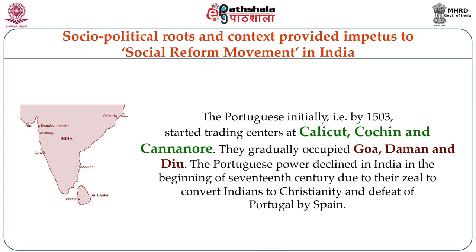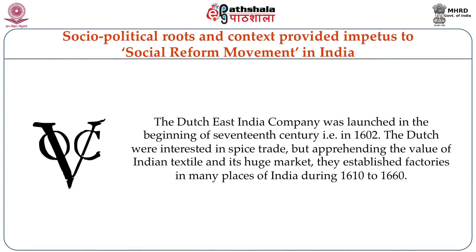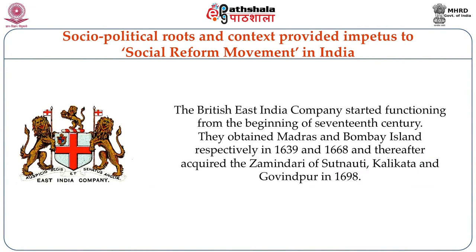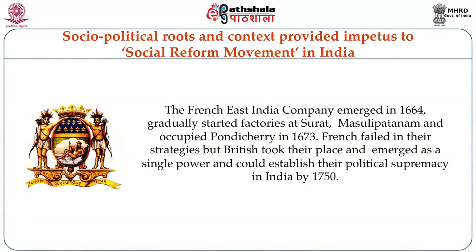The Dutch East India Company was launched in the beginning of the 17th century, that is in 1602. The Dutch were interested in spice trade, but apprehending the value of Indian textile and its huge market, they established factories in many places of India during 1610 to 1660. The British East India Company started functioning from the beginning of the 17th century. They obtained Madras and Bombay Island respectively in 1639 and 1668, and thereafter acquired the Zamindari of Sutanuti, Kolkata and Govindapur in 1698. The French East India Company emerged in 1664, gradually started factories at Surat, Masulipatnam and occupied Pondicherry in 1673.